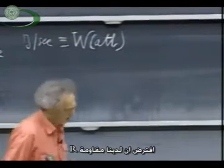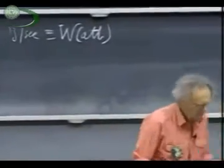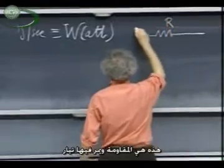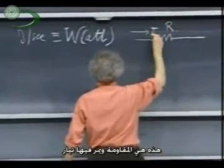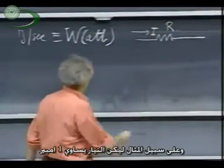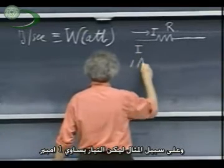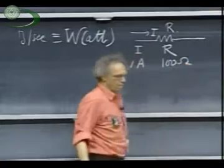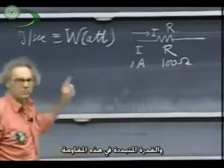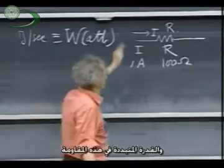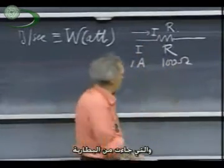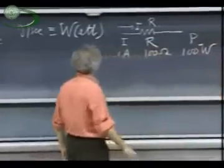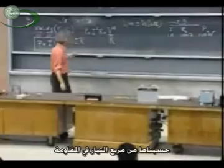So suppose we have a resistance R, and we run a current through it. This is the resistance. And we run a current I through it. And let us take an example that the current I is one ampere, and that the resistance is one hundred ohm. Then the power which is dissipated in this resistor has to be provided by your battery. That power P is now one hundred watts. I square R, if you want to use this.